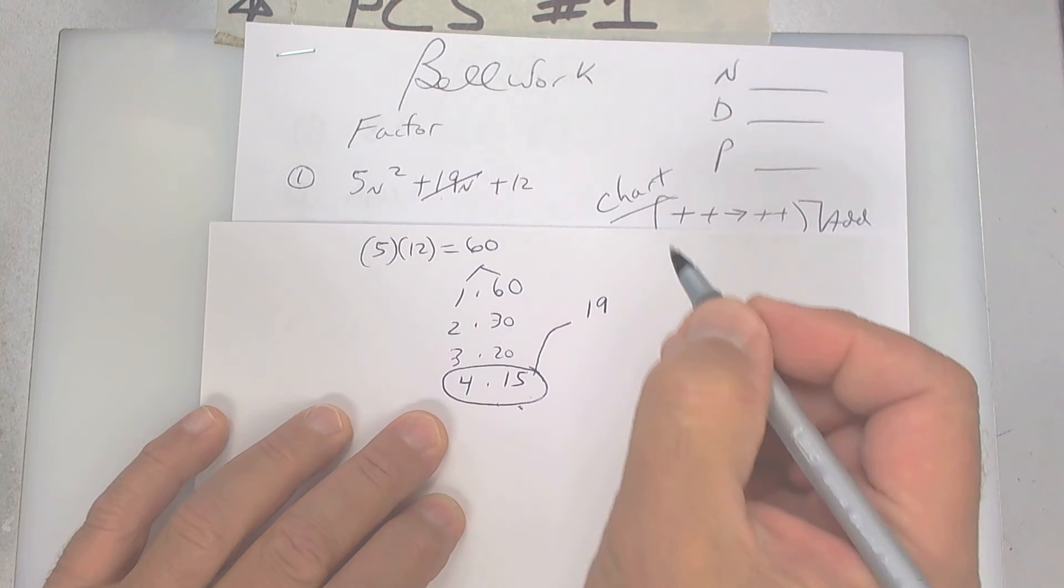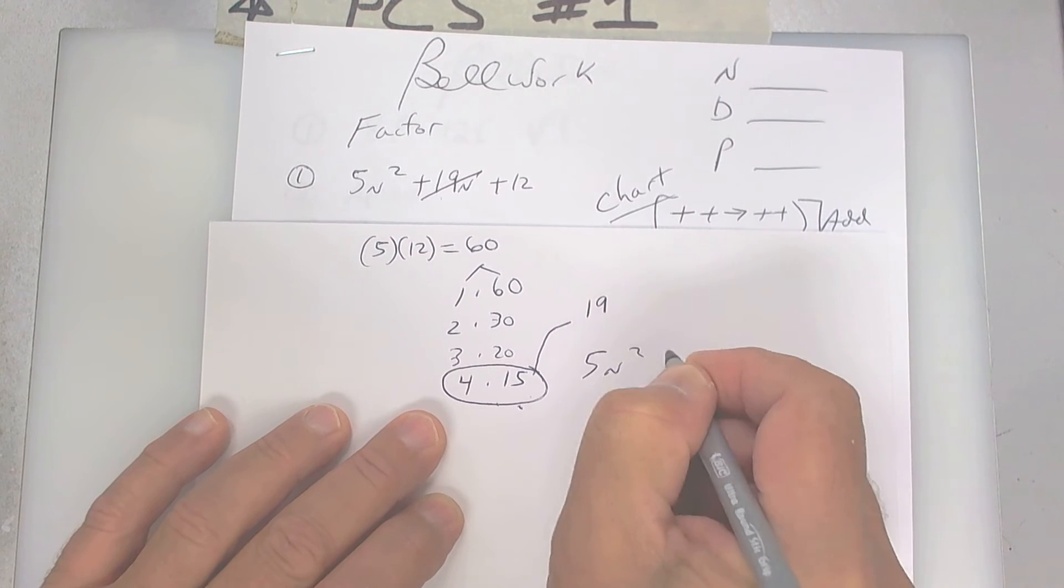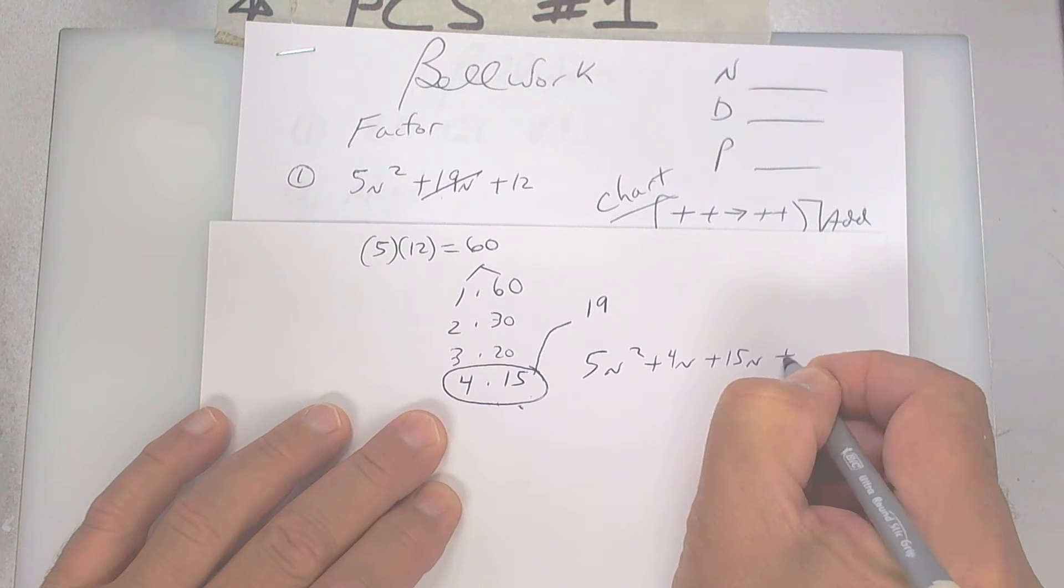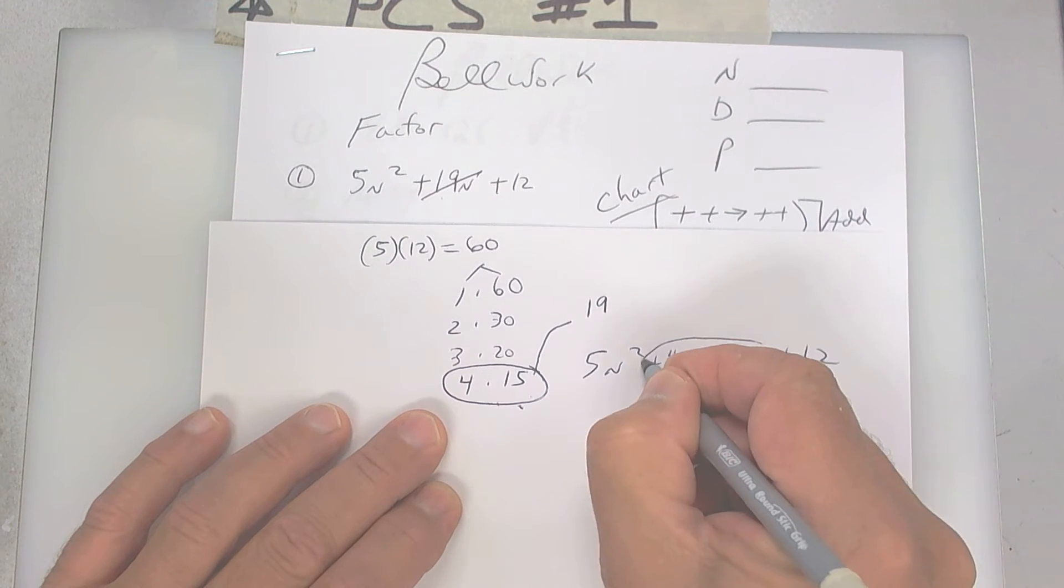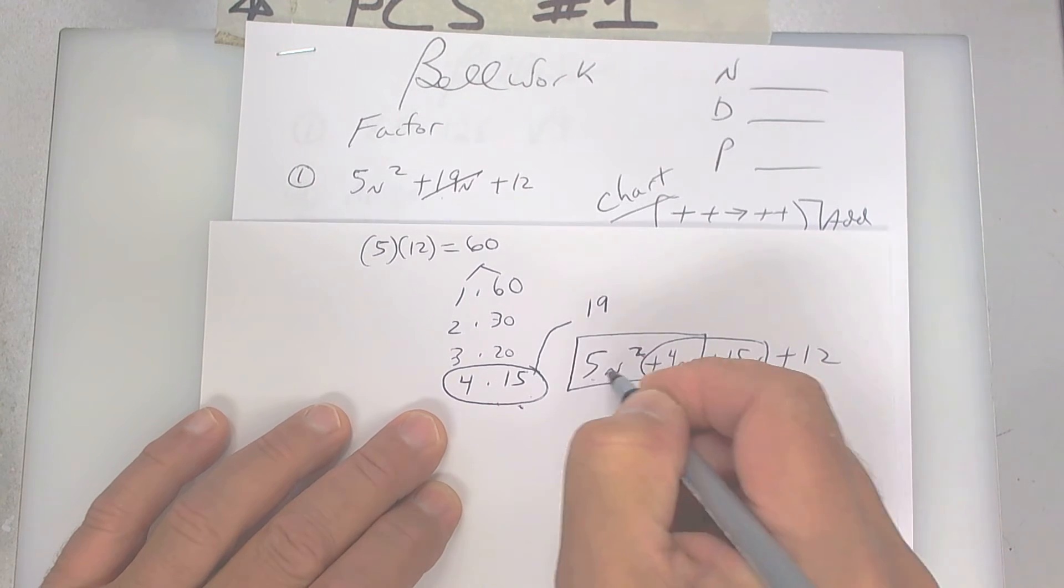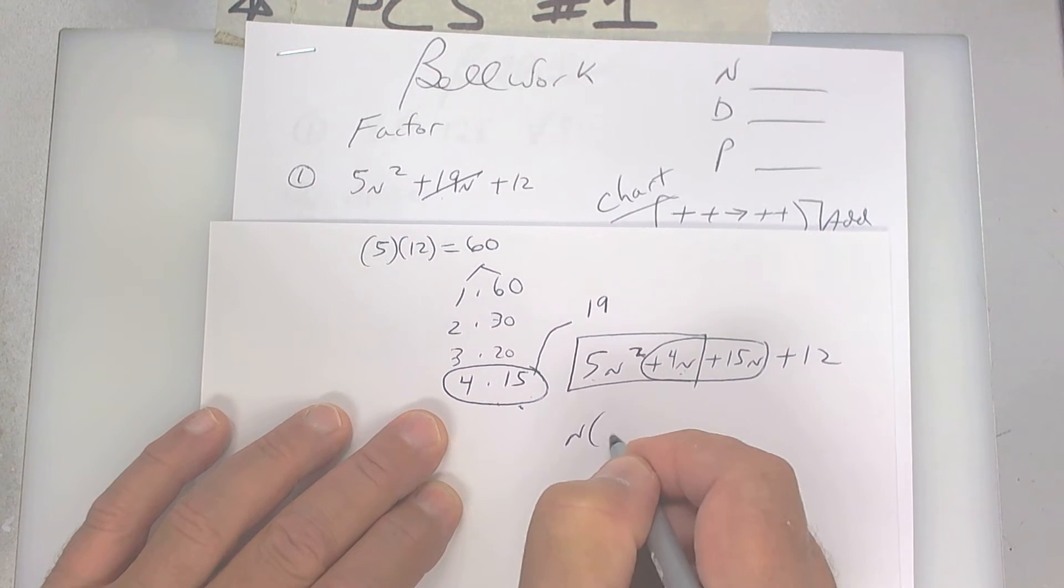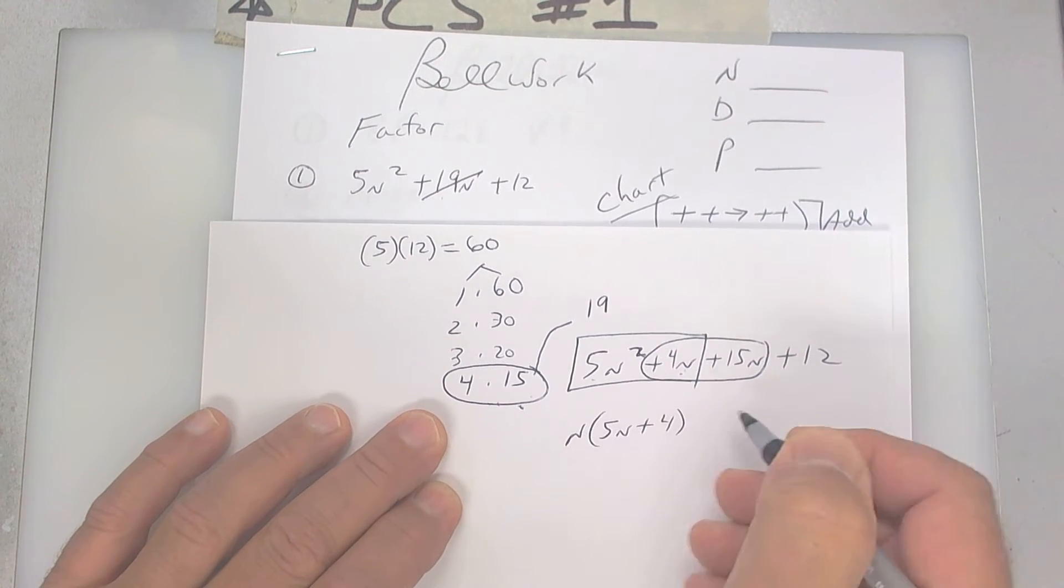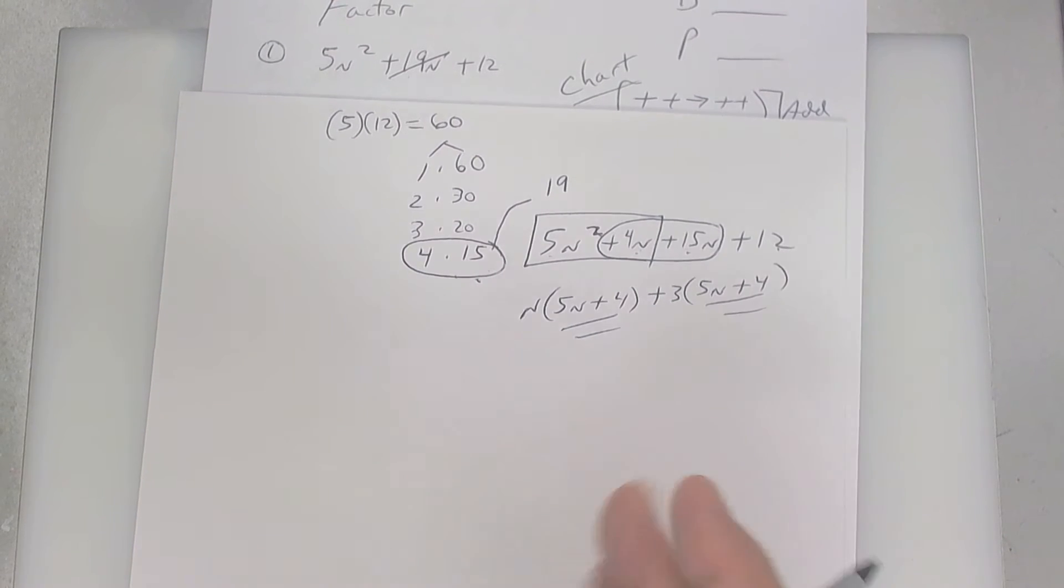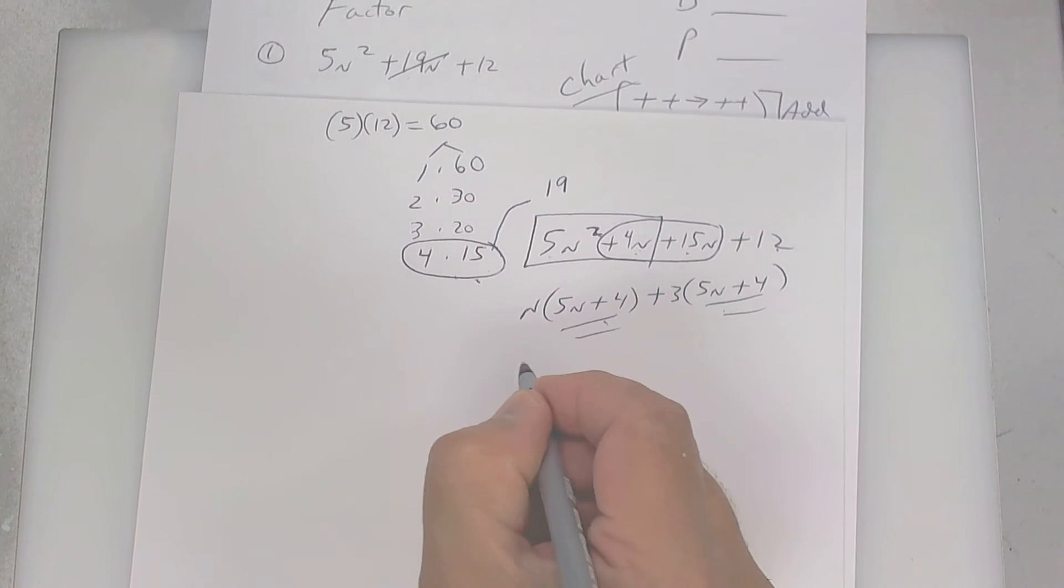So this is my answer. We're going to substitute this in place of this, so put 5n squared plus 4n plus 15n plus 12. So here's your 19 right here. At this point what you're going to do is group factor. Out of here it looks like you can take out an n, so you're left with 5n plus 4. This one right here you can take out a 3, I think, so put plus 3, and it should be 5n plus 4. This is now the same as that, which is what we want. One here, one here, you're going to take one out.